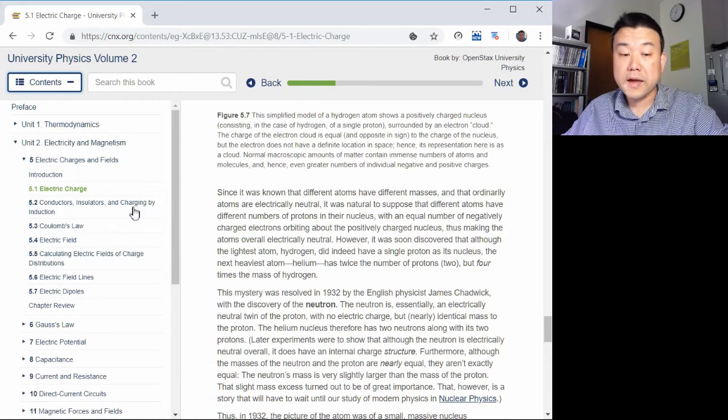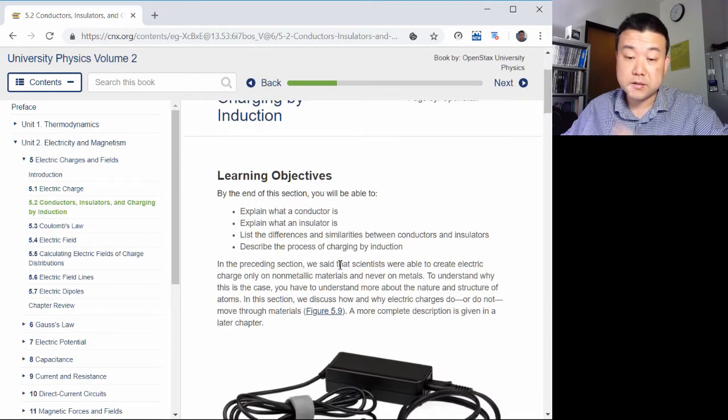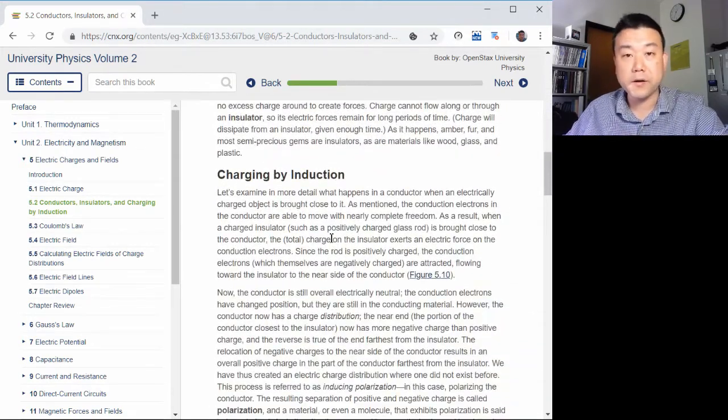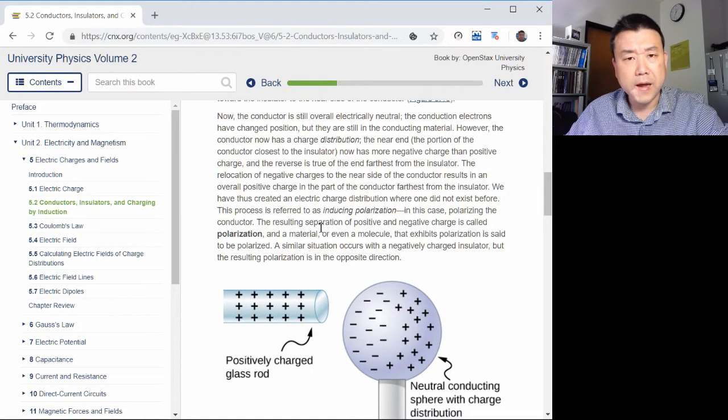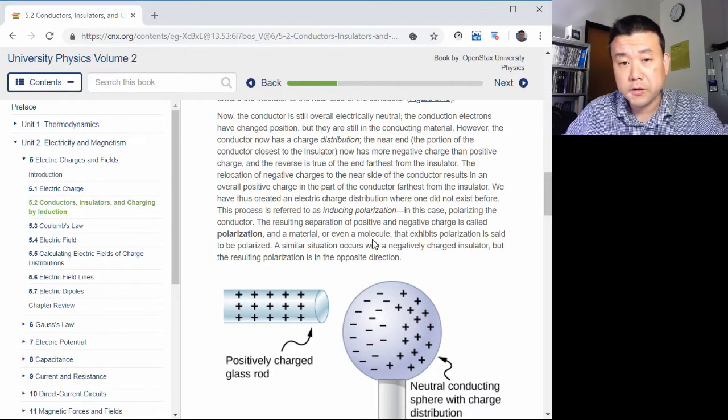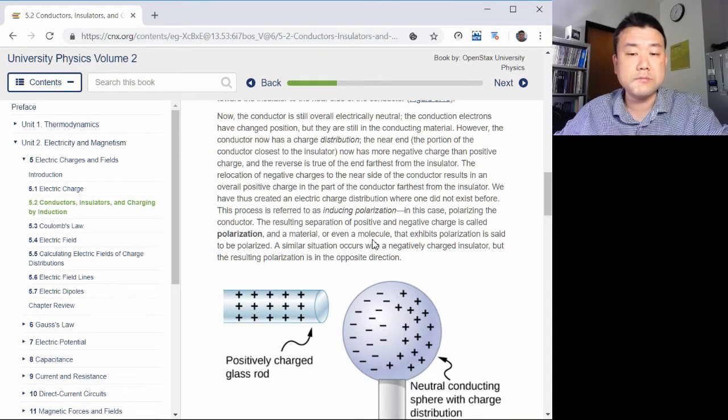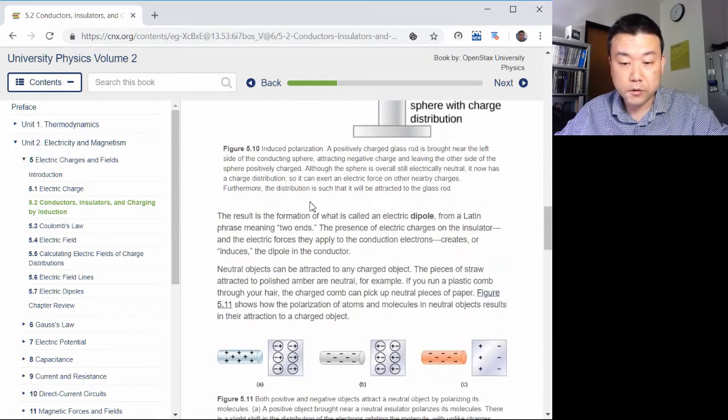And the next section talks about conductors and insulators. This is another thing that you might be somewhat familiar with, the difference between rubber and metal. We are going to spend more time with this distinction, especially with the properties of conductor, in the next couple of weeks, as we introduce concepts that will make this more relatable. But for now, give it a quick read-through.